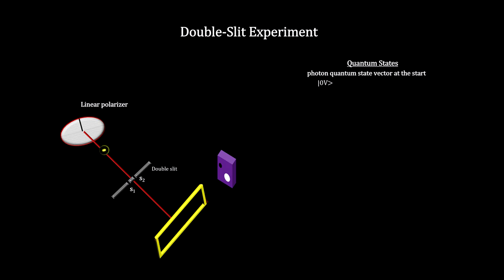As it travels to the double slit, it evolves into a linear superposition state for S1 and S2. It represents the state where it could be at either S1 or S2.